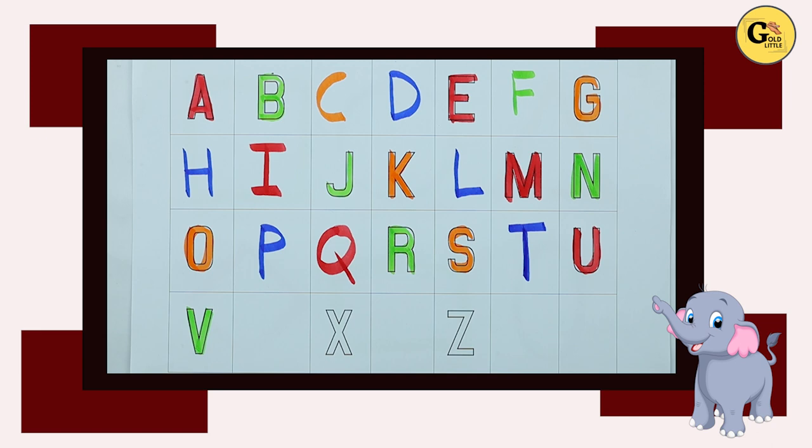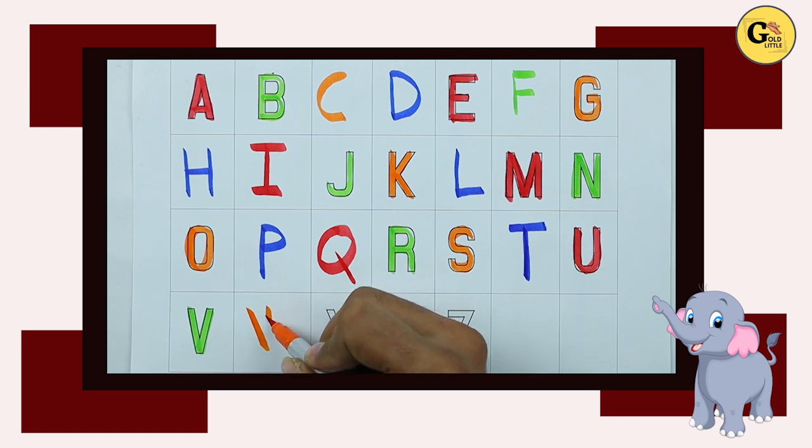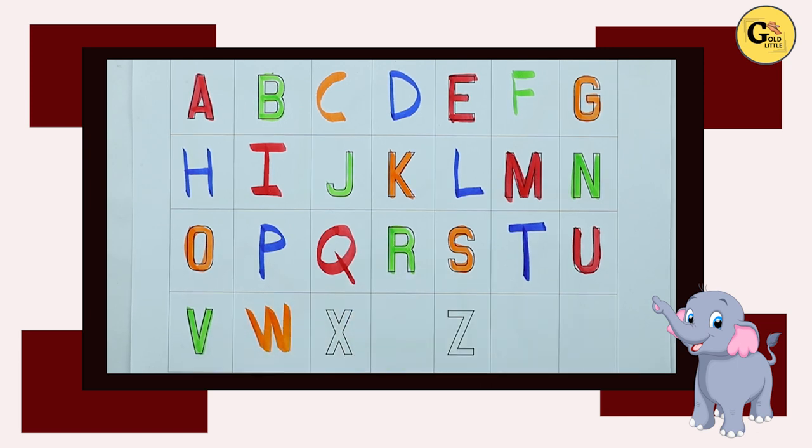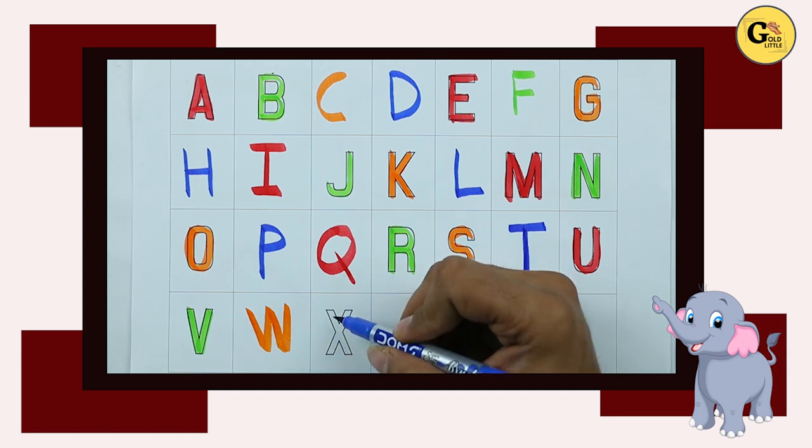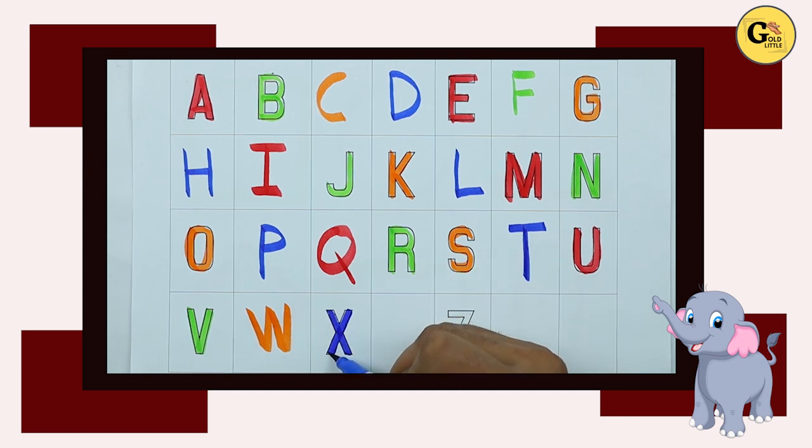What next? Tell me, tell me. Yes, right. It's W. With orange color. It's W. W for watch. X. X for xylophone. What next?